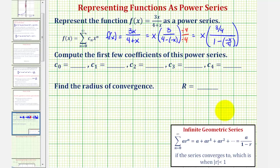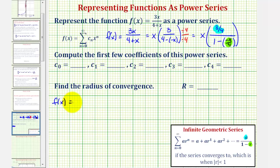In this form, we can recognize that a is equal to 3/4 and r, the common ratio, is equal to negative x divided by 4. Therefore, f(x) equals x times the summation from n equals 0 to infinity of a — which is 3/4 — times r to the power of n, which is negative x divided by 4 raised to the power of n.